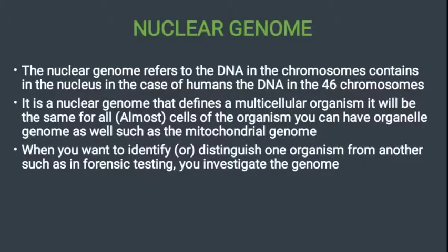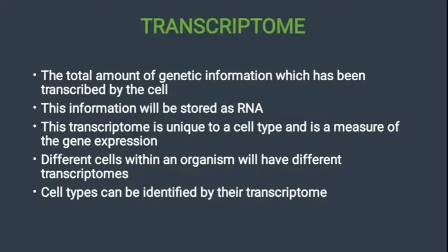Next we see the transcriptome. The transcriptome is the total amount of genetic information which has been transcribed by the cell. The information is stored as RNA. The transcriptome is unique to a cell type and is a measure of gene expression. Different cells within an organism will have different transcriptomes, and cell types can be identified by their transcriptome. The key difference: in the nuclear genome, it is used to identify or distinguish one organism from another, whereas the transcriptome identifies cell types.